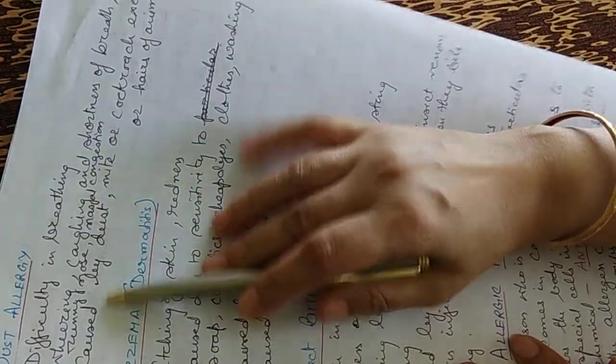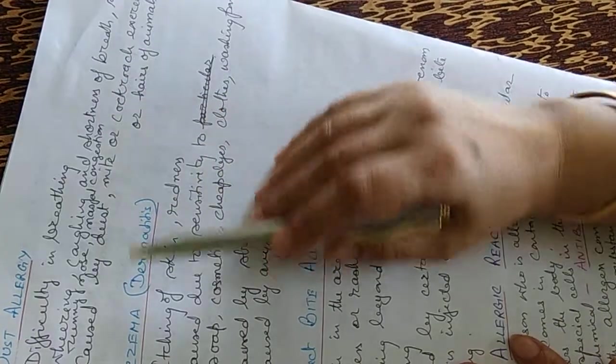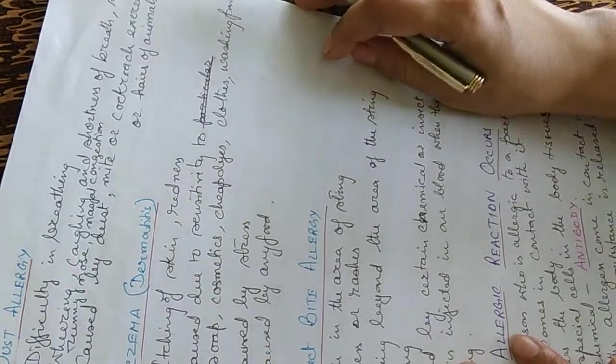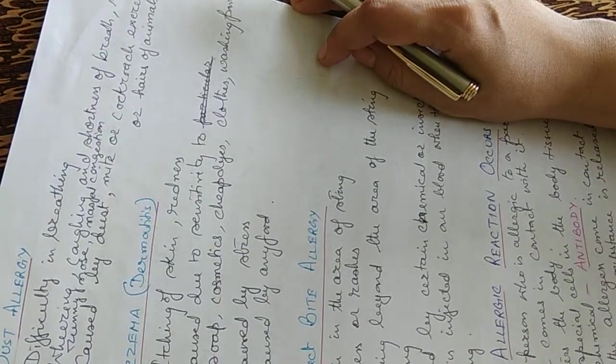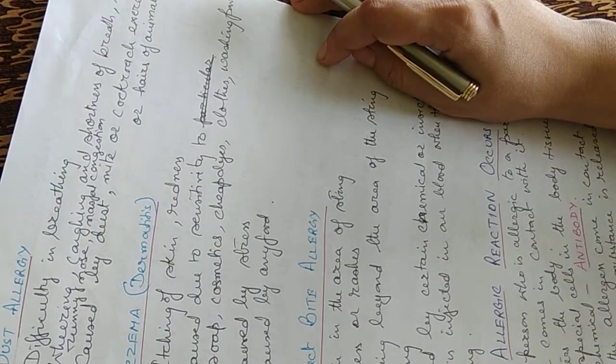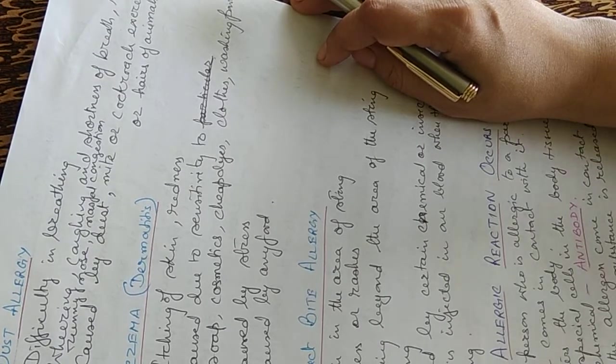Dust allergy causes difficulty in breathing. The symptoms generally are wheezing, coughing and shortness of breath, sneezing, running nose and nasal congestion. These dust allergies are caused by dust, mite or cockroach excreta or hairs of animals.